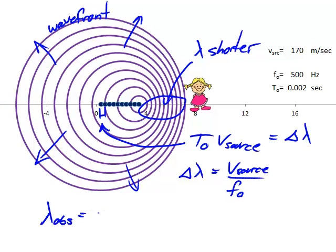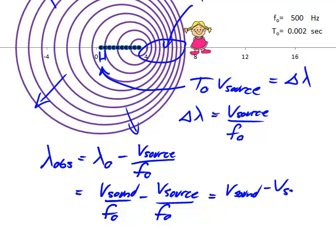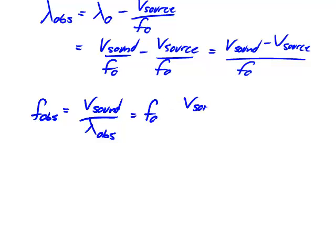So lambda-observed equals lambda-naught minus v-source over F-naught, which equals v-sound over F-naught minus v-source over F-naught, and that simplifies to (v-sound minus v-source) over F-naught. The observed frequency is the speed of sound divided by the observed wavelength, giving F-naught times v-sound over (v-sound minus v-source).